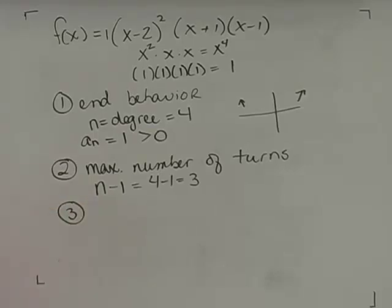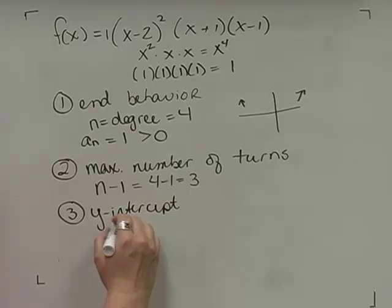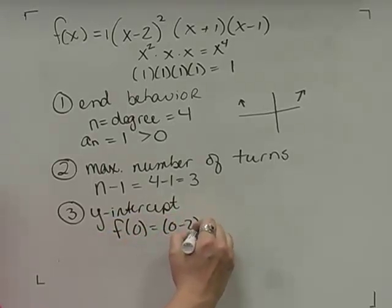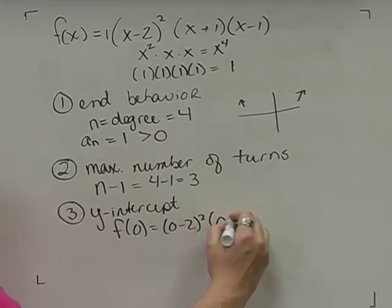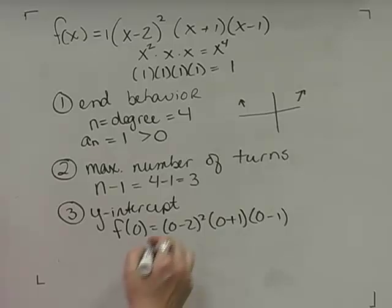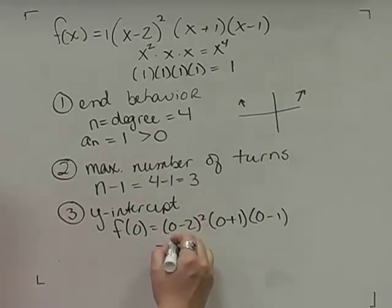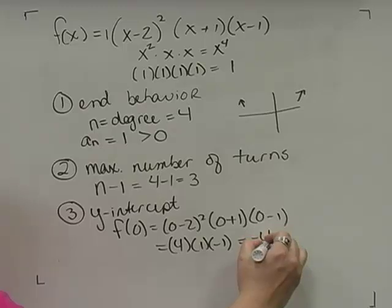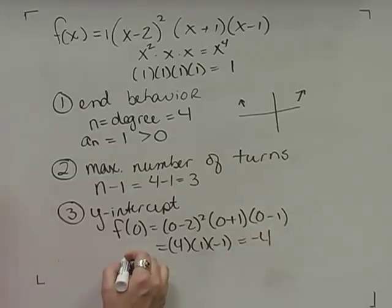Next I'm going to find the y-intercept by substituting 0 for x. So f(0) equals (0 minus 2) squared times (0 plus 1) times (0 minus 1). That gives negative 2 squared which is 4, times 1, times negative 1, so I get negative 4. My y-intercept is (0, negative 4).